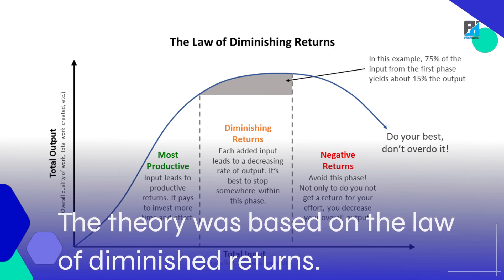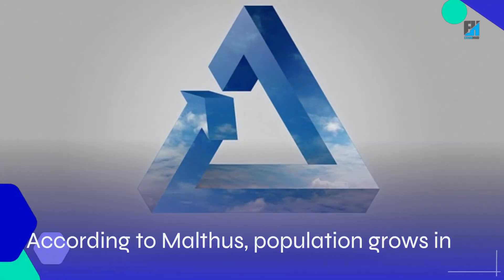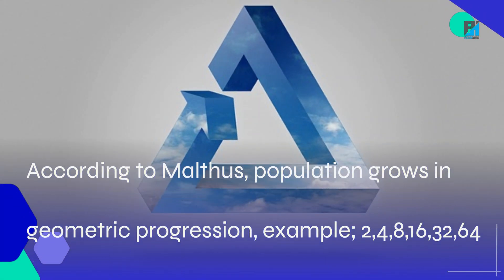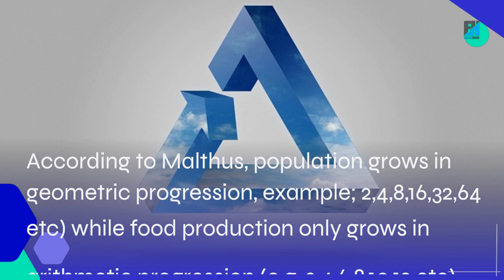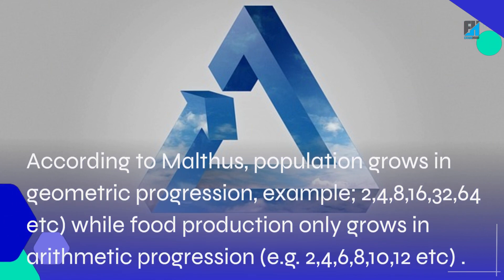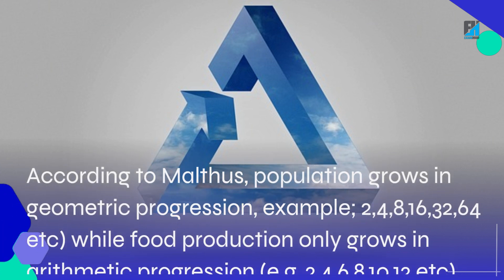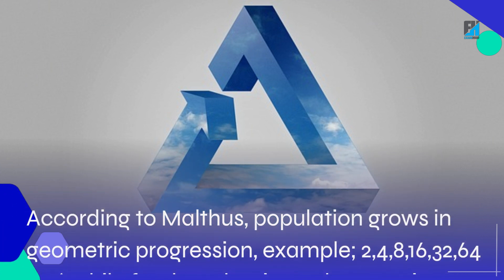The theory was based on the law of diminishing returns. According to Malthus, population grows in geometric progression — for example, 2, 4, 8, 16, 32, 64 — while food production only grows in arithmetic progression — for example, 2, 4, 6, 8, 10, 12, and so on.